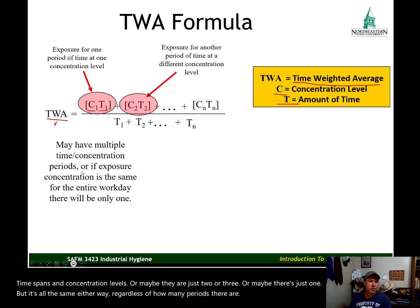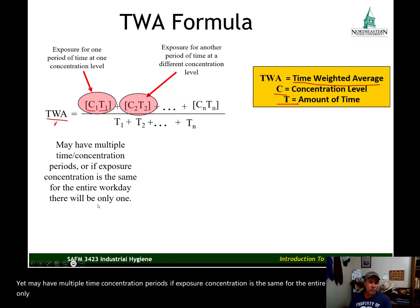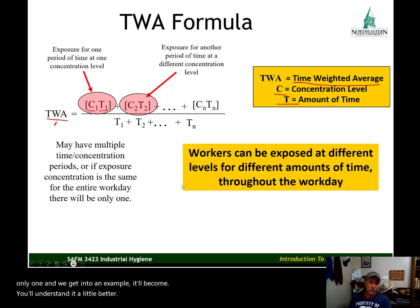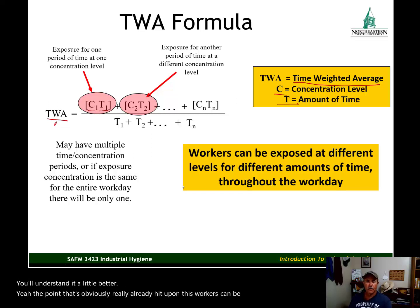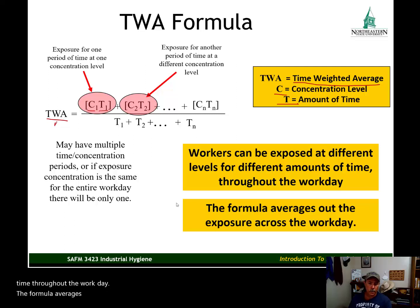It may have multiple time-concentration periods, or if the exposure concentration is the same for the entire workday, there will be only one. Workers can be exposed at different levels for different amounts of time throughout the workday. The formula averages out the exposure across the workday — and that's what the time weighted average is: the average exposure across the entire work period.